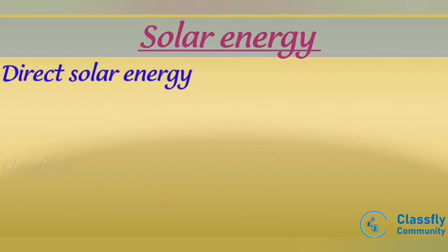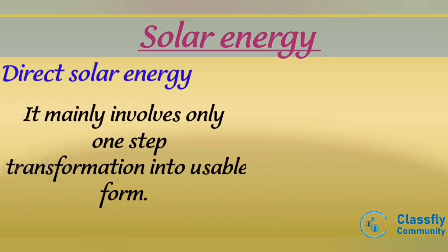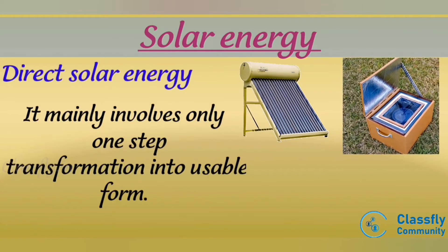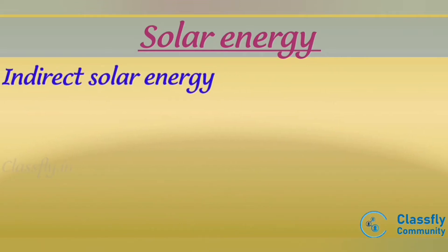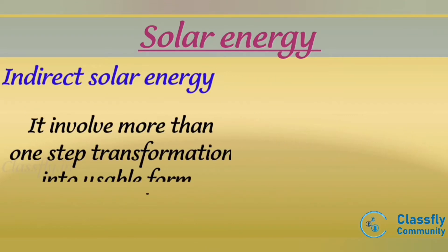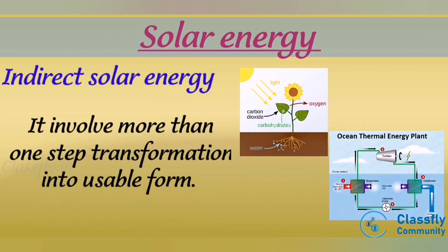Direct solar energy mainly involves only one step of transformation into a usable form. For example: solar water heater, solar cooker, and photovoltaic cells. Indirect solar energy mainly involves more than one transformation to reach a usable form. For example: photosynthesis and ocean thermal energy.